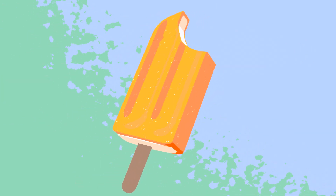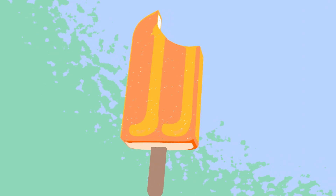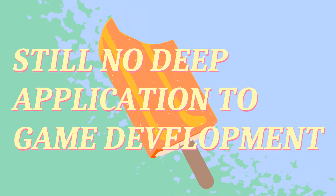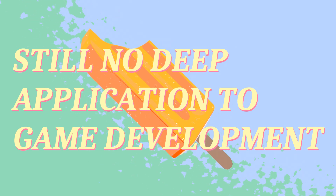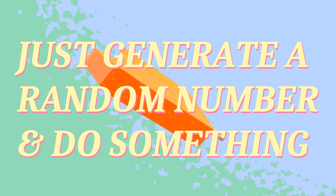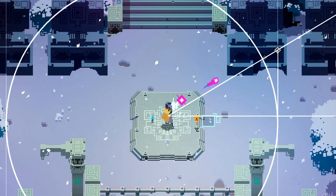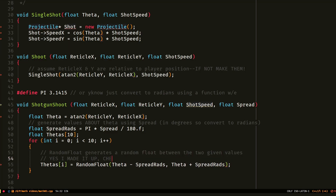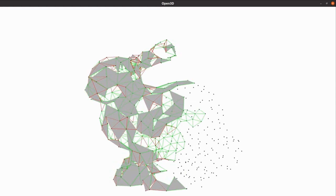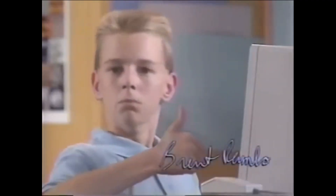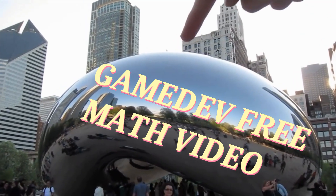All right, time for the probability video I should have made originally — years later and I still don't see much of a direct application of probability for game dev, other than just generating a random float between zero and one and doing something with that. If we look back at the algebra video, that's essentially what we did to create the spread on the quote-unquote shotgun we designed. But hopefully I've gaslit you into liking math enough to just launch into a probability video raw without any concrete game dev example.